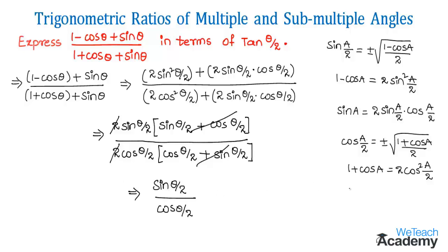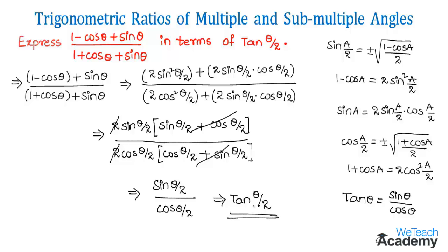We know that tan theta equals sin theta divided by cos theta. So sin(theta/2) divided by cos(theta/2) equals tan(theta/2). Hence we have expressed the given expression — (1 minus cos theta plus sin theta) divided by (1 plus cos theta plus sin theta) — in terms of tan(theta/2).